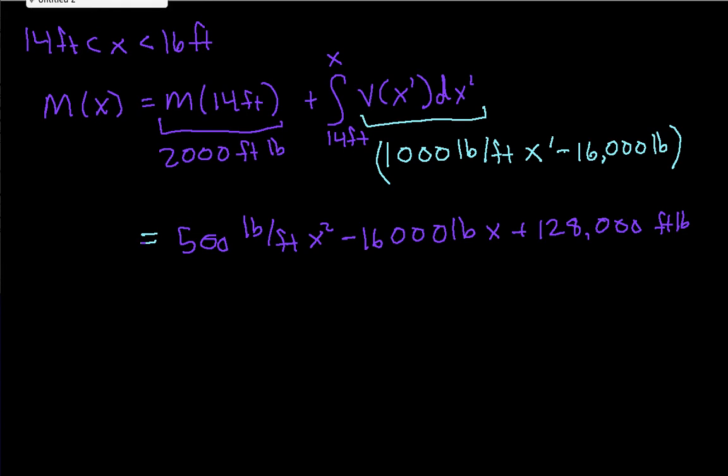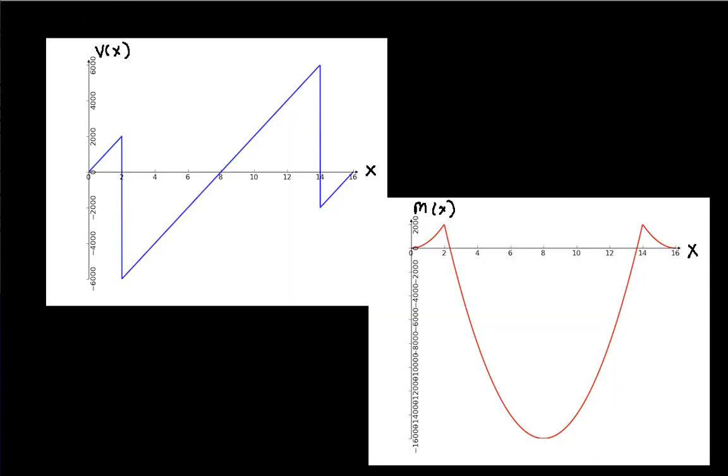So if we go to the plot of this, I've plotted v of x here, and now I've plotted m of x as I've just computed it. And you can see that it's composed of three parabolic sections. I go from 0 to 2. And again, 2 is where one of my discrete forces are. Then I go from 2 to 14. 14 is where the other discrete force is. And then I go back to 16.